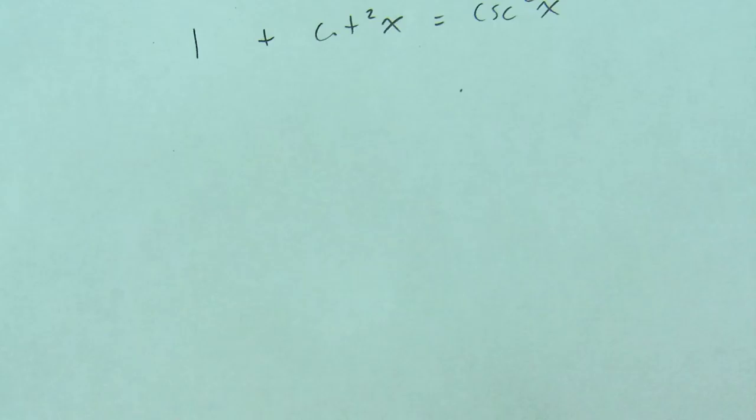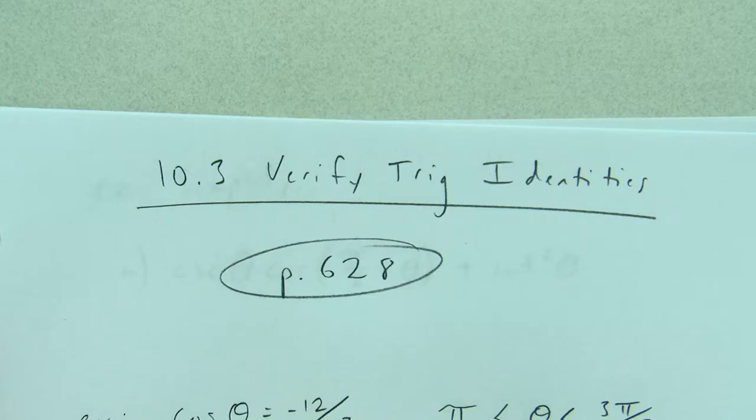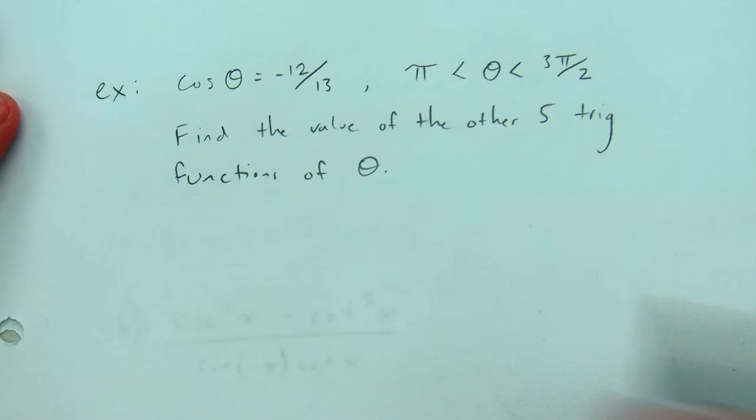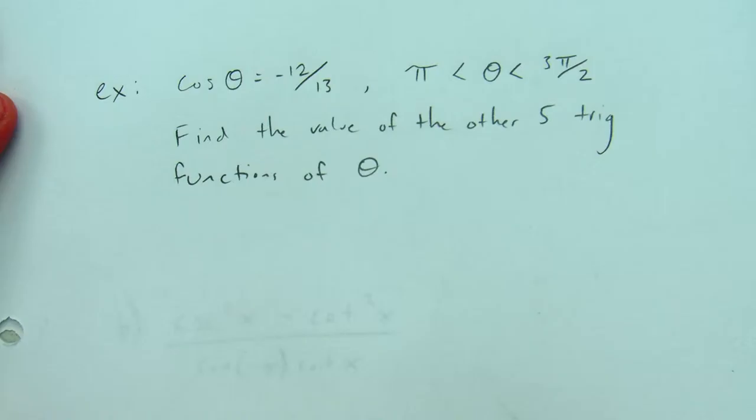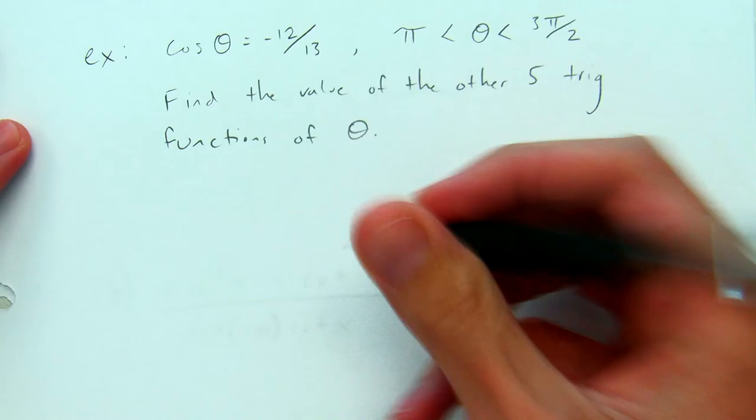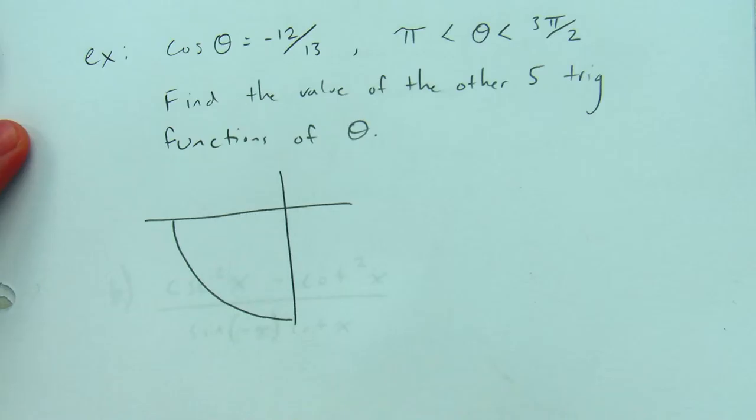So what can we do with all of this information? The first kind of problem we're going to do is one that we could have done before using a different method. Here's our first example: we're given that cosine of theta is negative 12 thirteenths, and we're told that theta is between π and 3π/2. We're asked to find the other five trig functions of theta. Theta is between π and 3π/2, which means it's in the third quadrant.